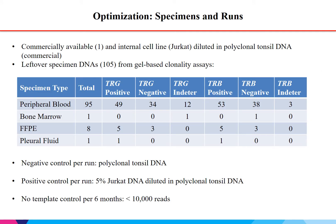We proceeded with two steps: first, optimization, and second, validation. For optimization, we used commercially available and internal cell line DNAs diluted in polyclonal tonsil DNA. We also used leftover DNAs from our gel-based clonality assays extracted from a variety of specimen types with varying results — positive, negative, or indeterminate for TRG and similarly for TRB. We decided to include a negative control per run, which was polyclonal tonsil DNA, and a positive control of 5% JURKAT DNA diluted in polyclonal tonsil DNA. A no-template control needs to be run every six months and should have less than 10,000 reads.